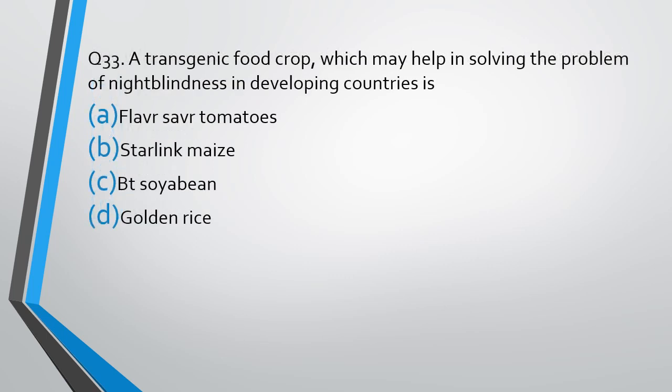Question number 33: A transgenic food crop which may help in solving the problem of night blindness in developing countries is: Flavr Savr tomatoes, Starlink maize, Bt soybean, or golden rice? The correct answer is option D — golden rice, because golden rice contains vitamin A and night blindness is caused by deficiency of vitamin A.